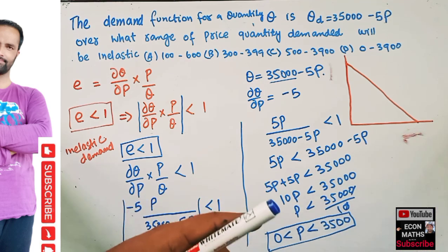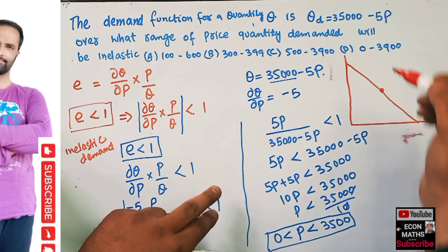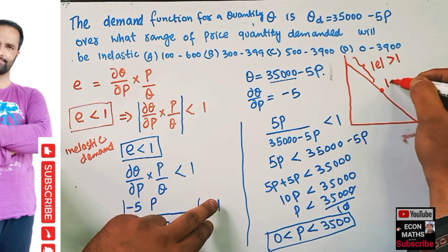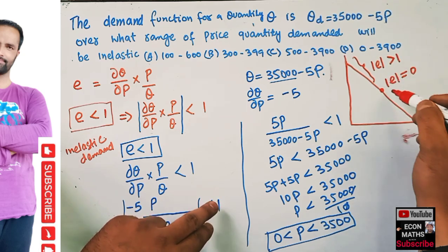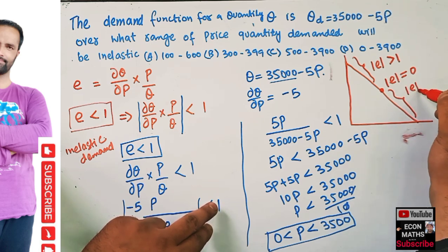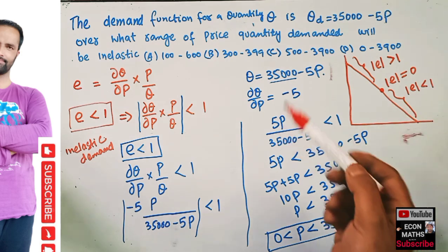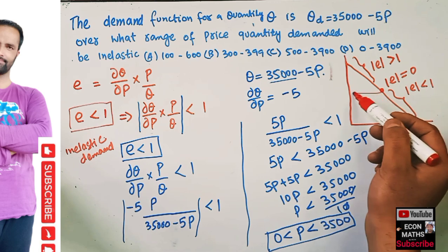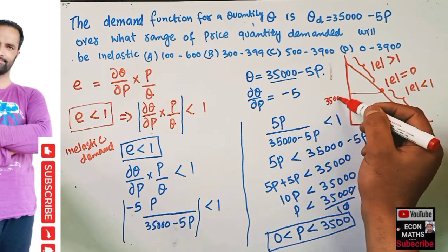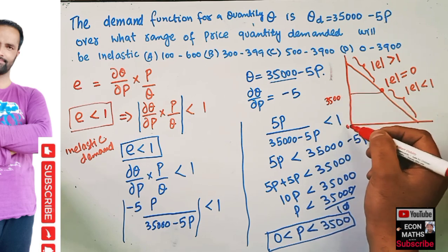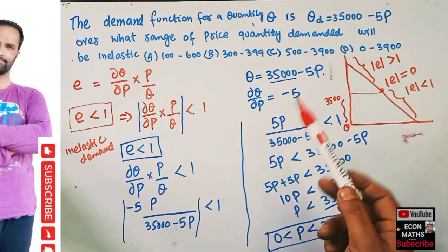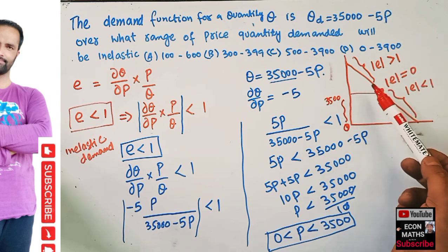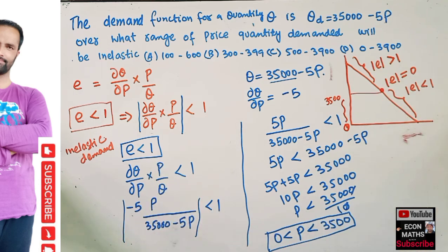At the midpoint of the demand curve, the absolute value of elasticity equals 1. Above the midpoint, elasticity is greater than 1 (elastic region), and below the midpoint, elasticity is less than 1 (inelastic region). So from 0 to 3,500, our quantity demanded will be inelastic. I have explained this in detail in another video on how elasticity changes along a demand curve.